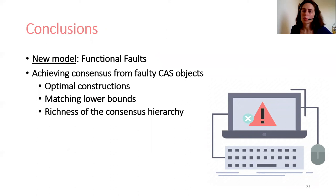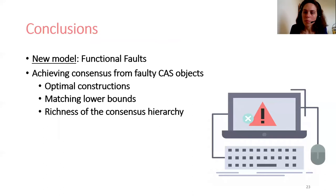In summary, we presented and formalized the functional faults model. We also demonstrated our model using a specific fault in the CAS synchronization primitive. We constructed robust consensus objects given different fault scenarios and proved their optimality by showing respective lower bounds. We also showed that our model is more expressive than the memory data faults model by beating one of its proven lower bounds. Finally, we demonstrated the richness of our test case by matching a robust construction per consensus number in the consensus hierarchy. Thank you very much.